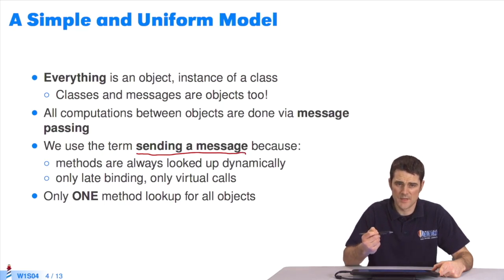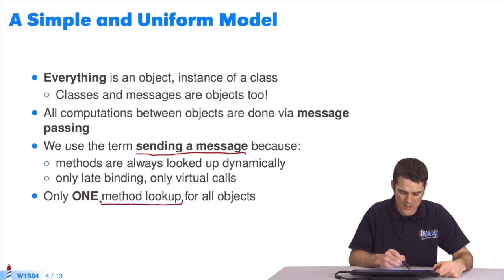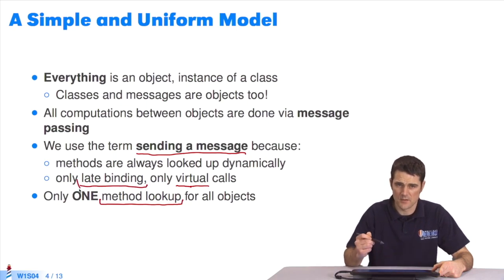Because when you send a message to an object, there's a particular algorithm called the method lookup. Just one algorithm which selects the right method to use. The methods are virtually bound. They accept late binding. I send a message to an object, and the method lookup selects the right method. We'll come back to that in a dedicated session.